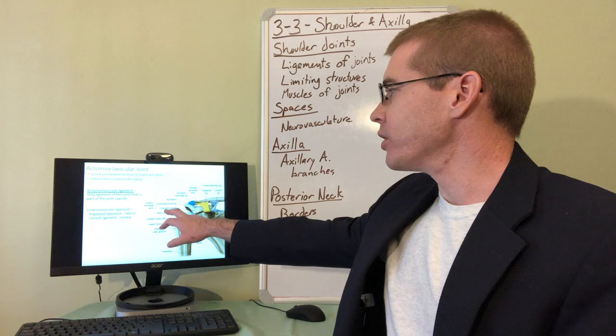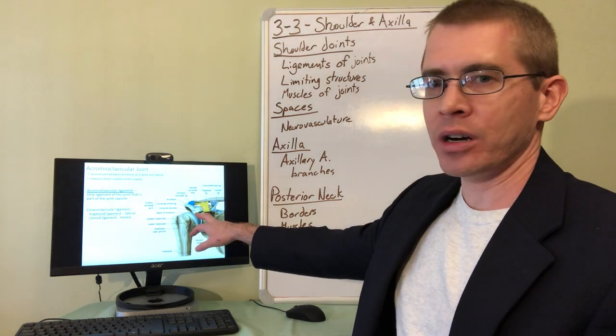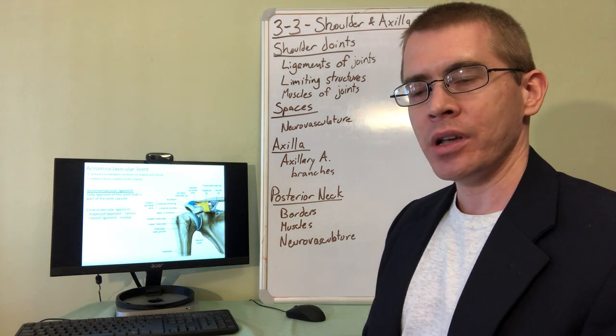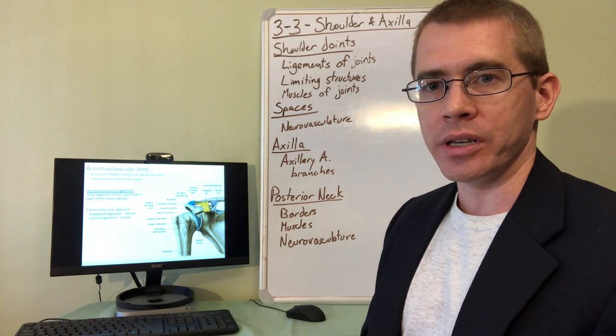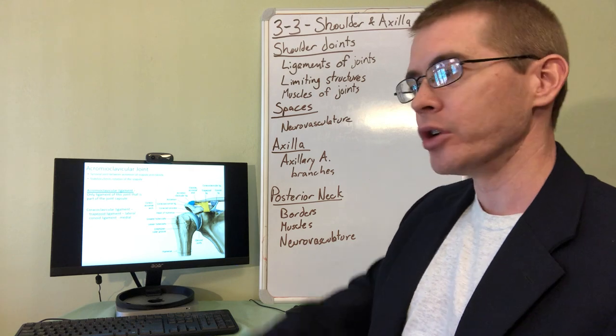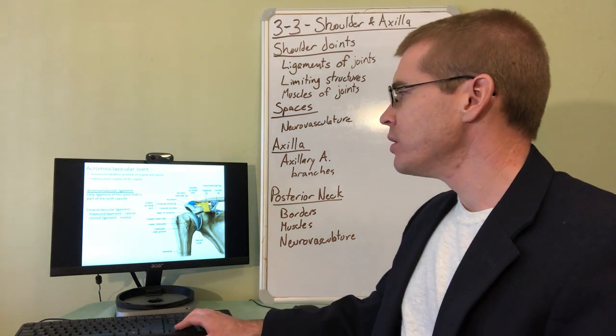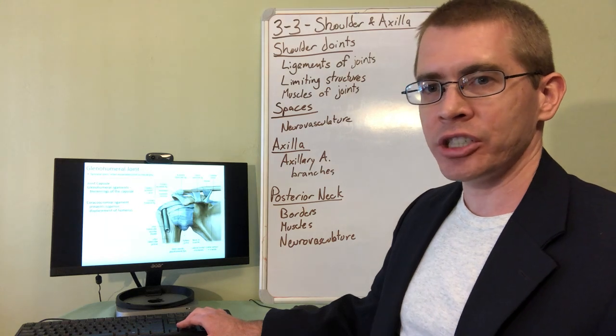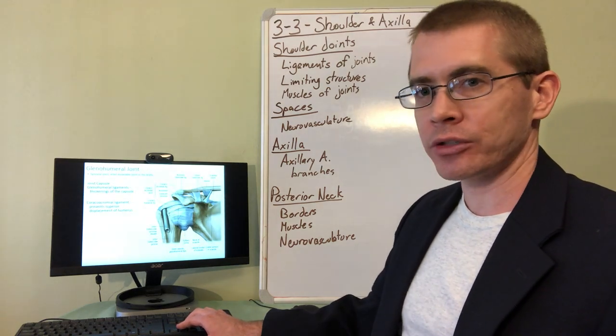Similarly, the coracoid process here, anterior on the scapula, is named coracoid because that literally means like a crow's beak, or beak-like, crow-like. So this information, once you understand the osteology and the etymology of these terms, it becomes very natural.